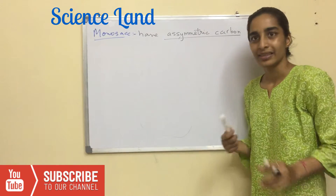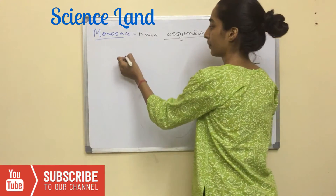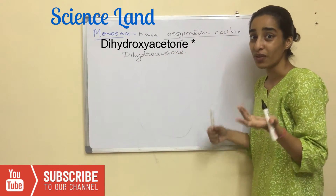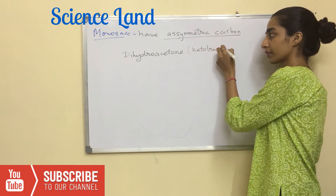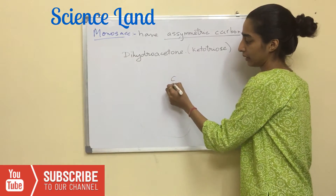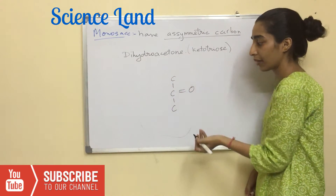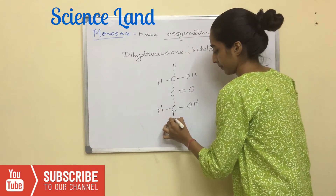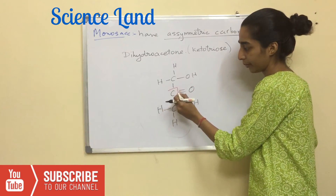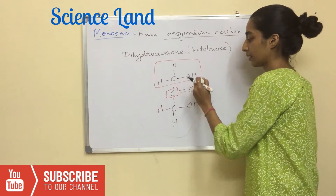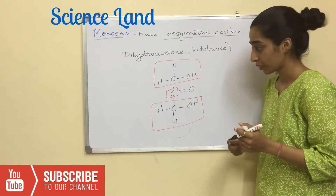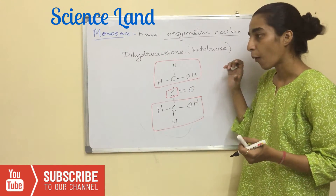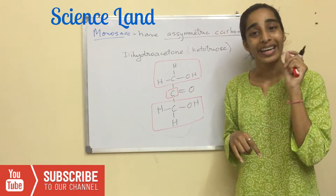There is an exception to chirality in monosaccharides. We studied a molecule called dihydroxyacetone, which is a ketotriose. Since it is a ketose, the second carbon has a ketone group, and that carbon has two common groups attached, making it symmetric. Thus, dihydroxyacetone is the only monosaccharide that is an exception to chirality.